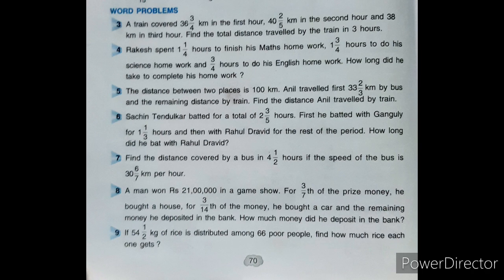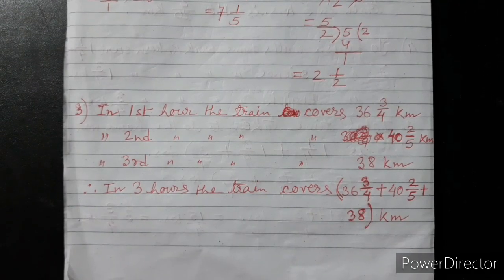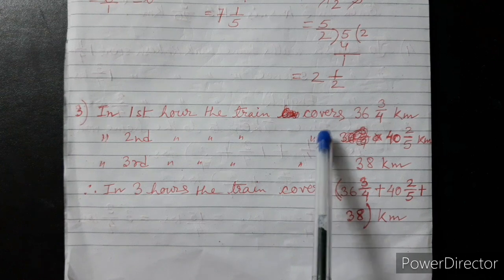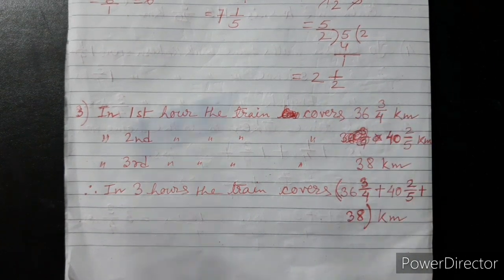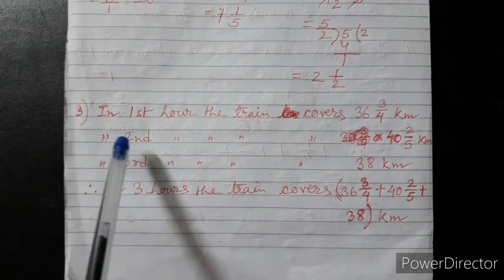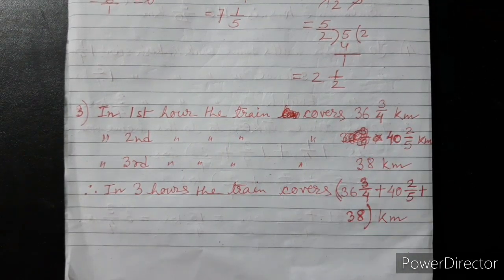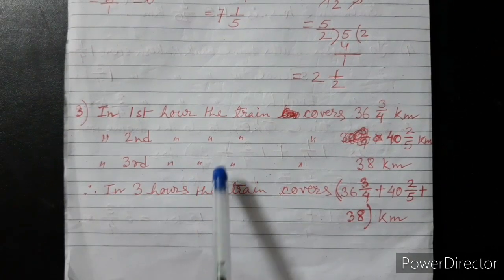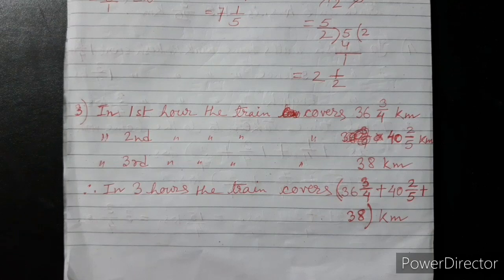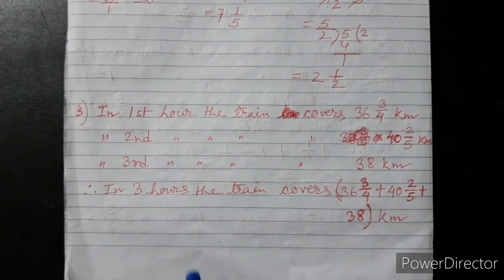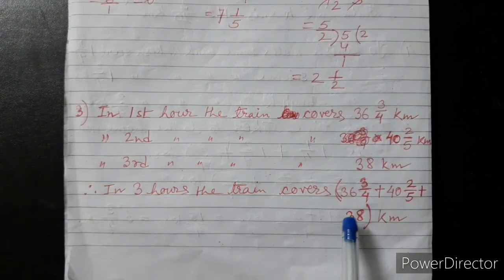Toh ek train first hour mein kuch distance gaya, second hour mein bhi kuch distance gaya aur third hour mein bhi kuch distance gaya. Toh kya calculate karna hai ki 3 hours mein train total kitna distance gaya. In first hour the train covers 36 and 3/4 km, in second hour 42 and 2/5 km, and in third hour 38 km. Therefore, in 3 hours the train covers this plus this plus this kilometer.